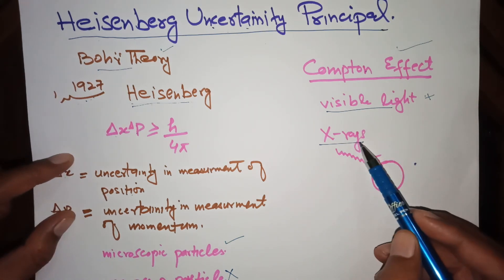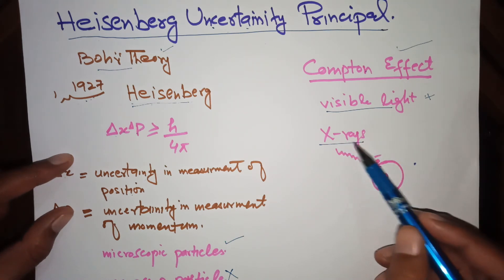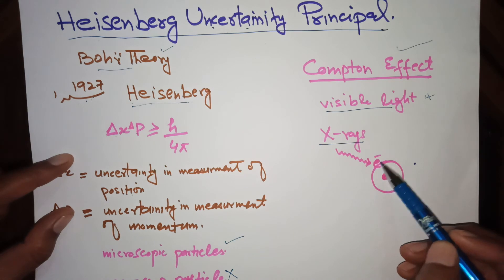So if we can find the position of electron accurately by using X-rays, its momentum will be changed.